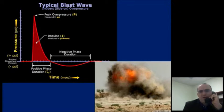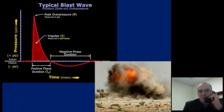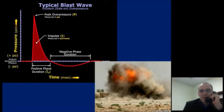Blast injury — theoretically, you have this very large release of energy from an explosion. And what that generates is a huge overpressure wave followed by an underpressure wave, a negative phase wave. And essentially what that does is it causes shear across tissue interfaces. And if you think about the lung, you have all these little pockets of air and pockets of tissue.